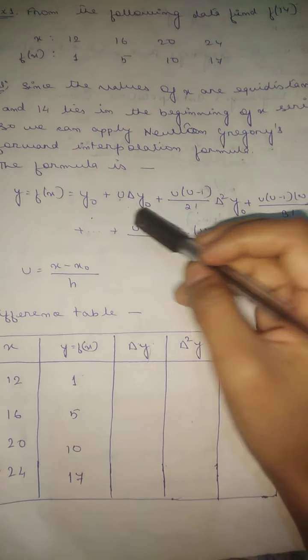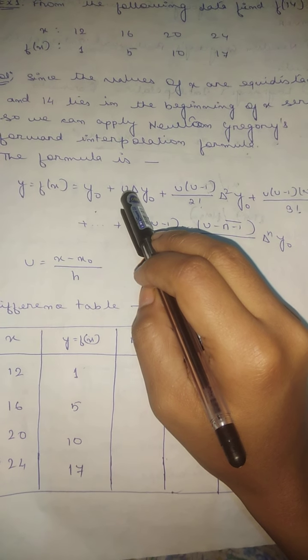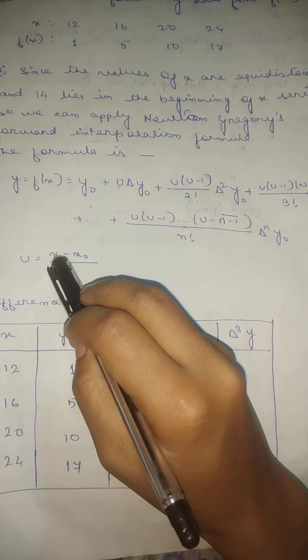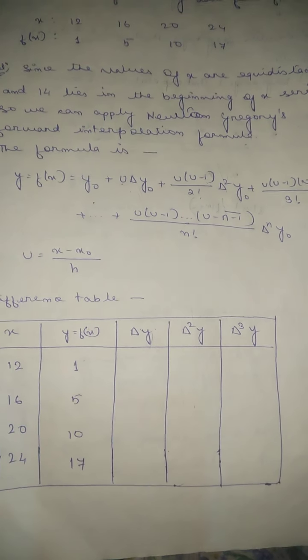Here u is defined as: u = (x - x0) / h. So substituting x = 14 and x0 = 12, with h = 4, we get u = (14 - 12) / 4 = 2/4 = 0.5.